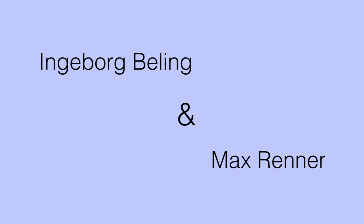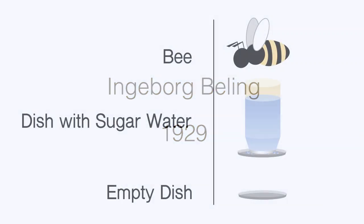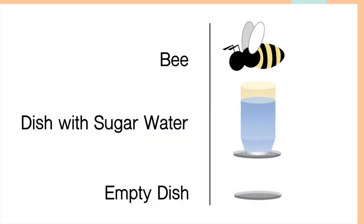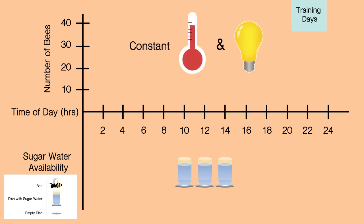Two researchers after Forel, Ingeborg Beiling and Max Renner, were responsible for significantly furthering Forel's observations. In 1929, Beiling developed a method for training bees on the 24-hour clock. She gave bees sugar water at a designated feeding place for several days and always at the same time of day under constant conditions. This means they were exposed to the same degree of temperature all throughout the days and the room was kept lit at all times, so there was no distinguishing day from night by these common cues. The dish was empty at all other times of the day.